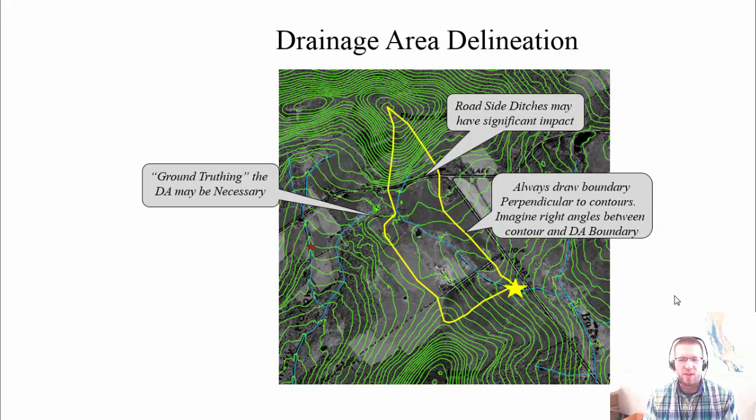So ground truthing is really important, especially if you have roads or man-made features, because they don't always get picked up in the LiDAR. You might see it as kind of a jagged contour or a little blip, but it's not very apparent. So it's really important to be able to walk your watershed to get an accurate idea of the map.